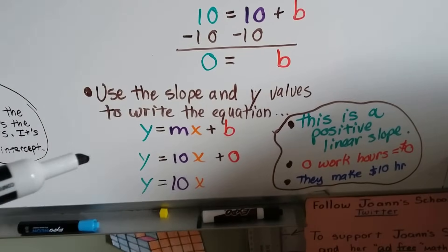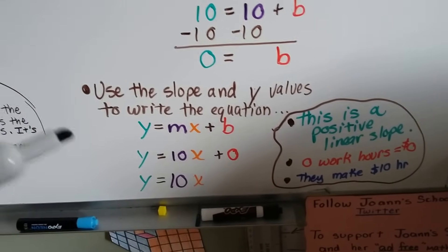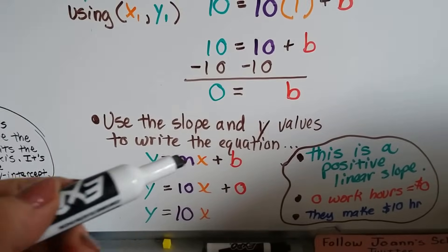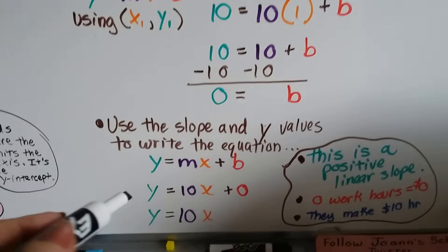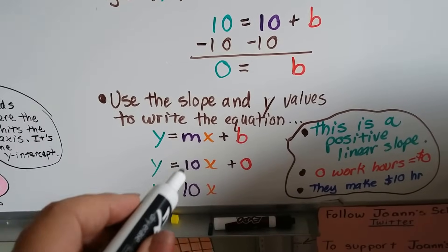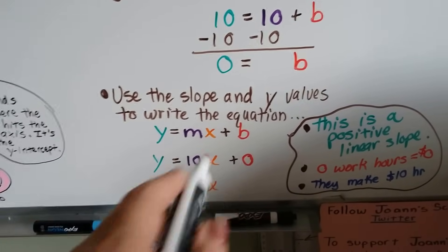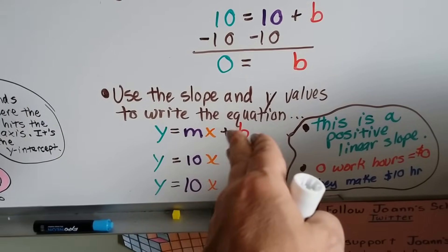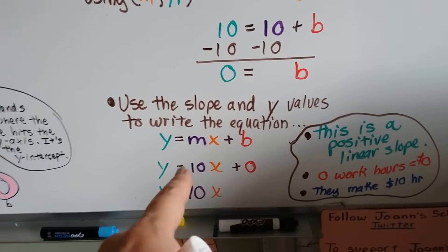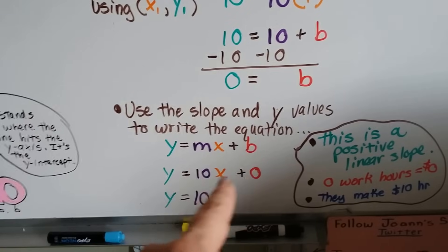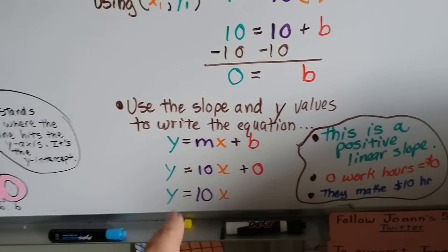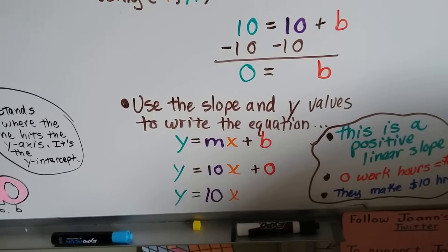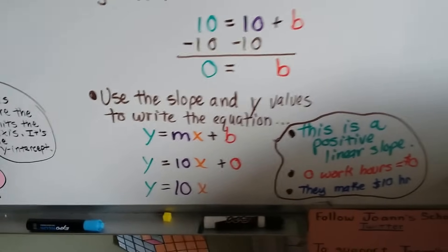We can use the slope and the y values to write the equation. The y equals mx plus b. This slope-intercept form ends up becoming y equals 10x plus 0. We don't need to write that 0. That's extra information. If 10 equals 10 plus 0, you don't need to put plus 0 at the end. It's 10 equals 10. So, we have y equals 10x. That is our equation.